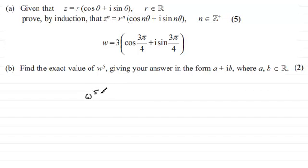So that's 3 to the power 5, and then this will be multiplied with the cosine of, and then we would just multiply the angle also by 5. So that's going to be 15π over 4, and then that will be plus i sine of 15π over 4.